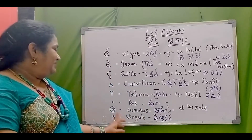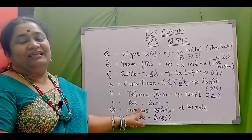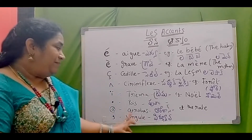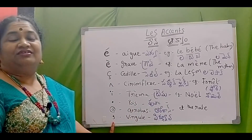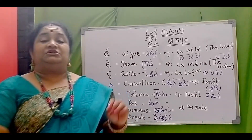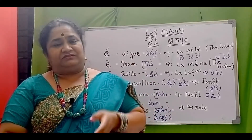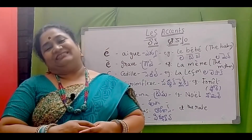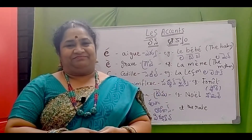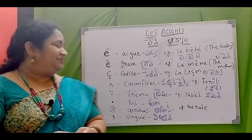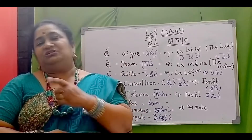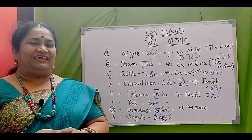Next, the dot is called point. At the rate symbol is called arrobas. Comma is called virgule. In French, decimal numbers use a comma — for example, fifty point two five is written as cinquante virgule vingt-cinq. To practice punctuation, try reading an email ID in French — for example: diana point celeste arrobas gmail point com.